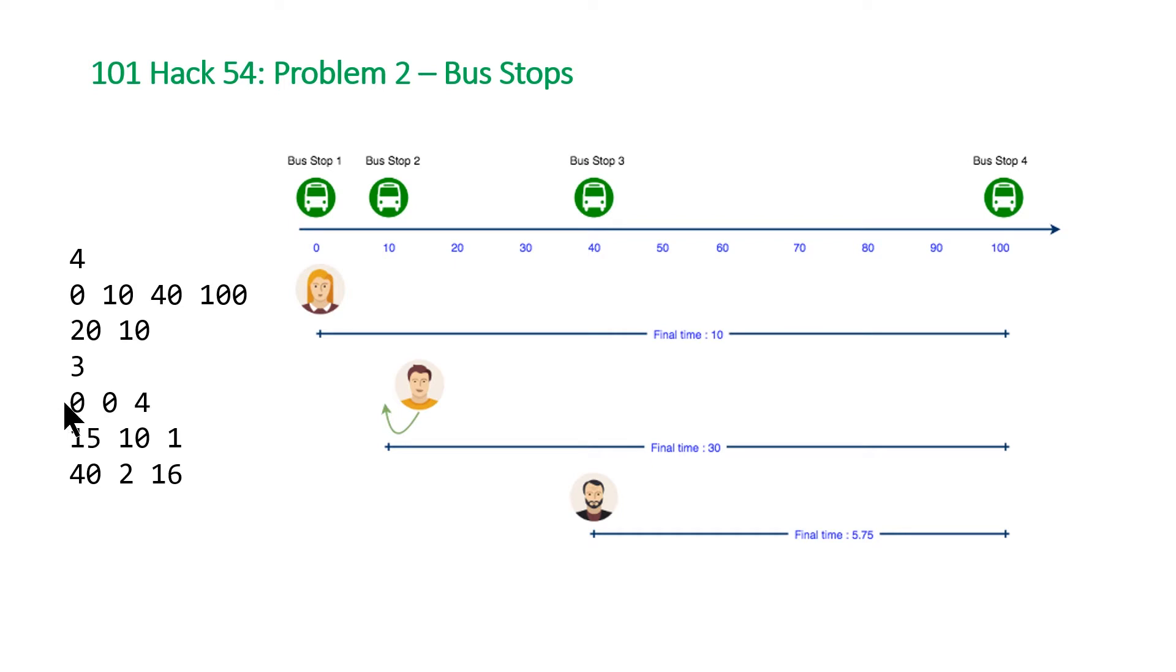Each of these individuals has three numbers. The first one is the starting position. You can see here the first individual starts at zero, the second at 15, and the third at 40.